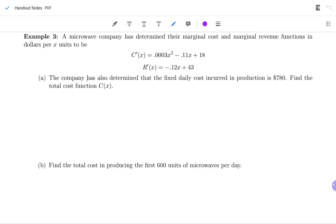The company has also determined that the fixed daily cost incurred in production is $780, and we want to find the total cost function C(x). So we want to go from the derivative C prime back to C.